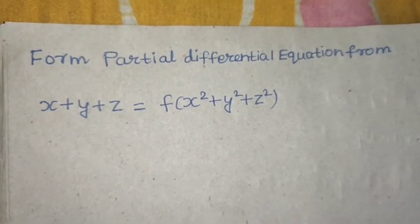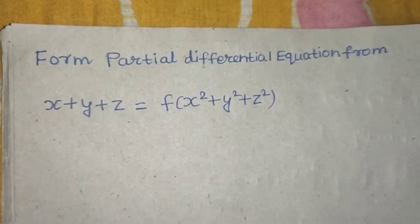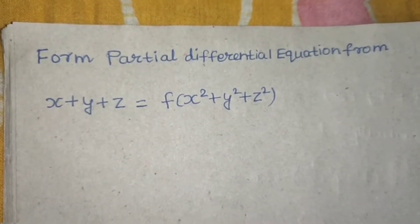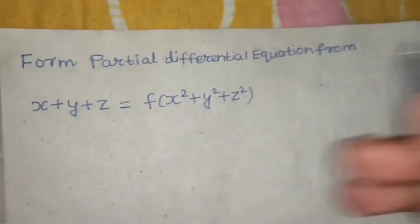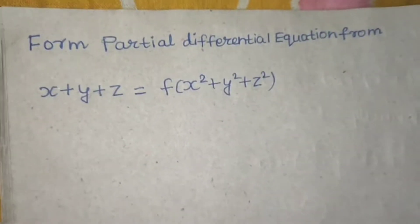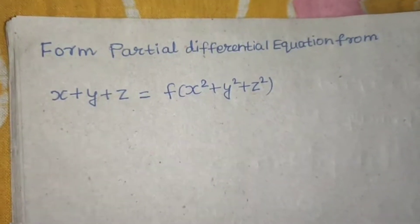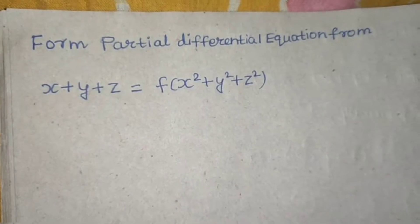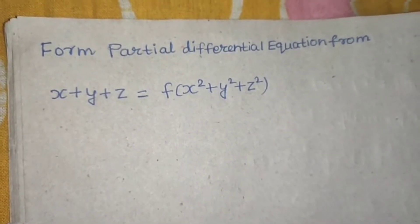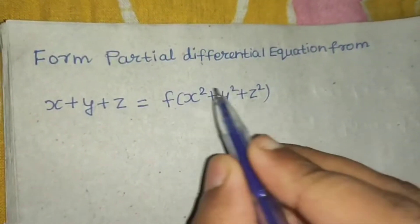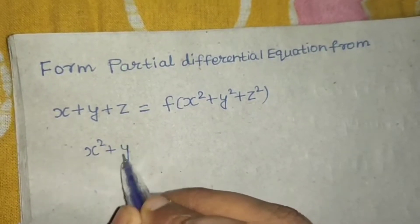Let's solve this question from partial differential equations. We have to form a partial differential equation from x plus y plus z equals f of x squared plus y squared plus z squared. This is a slightly different approach compared to what we have solved in previous questions where we had to eliminate the arbitrary function.